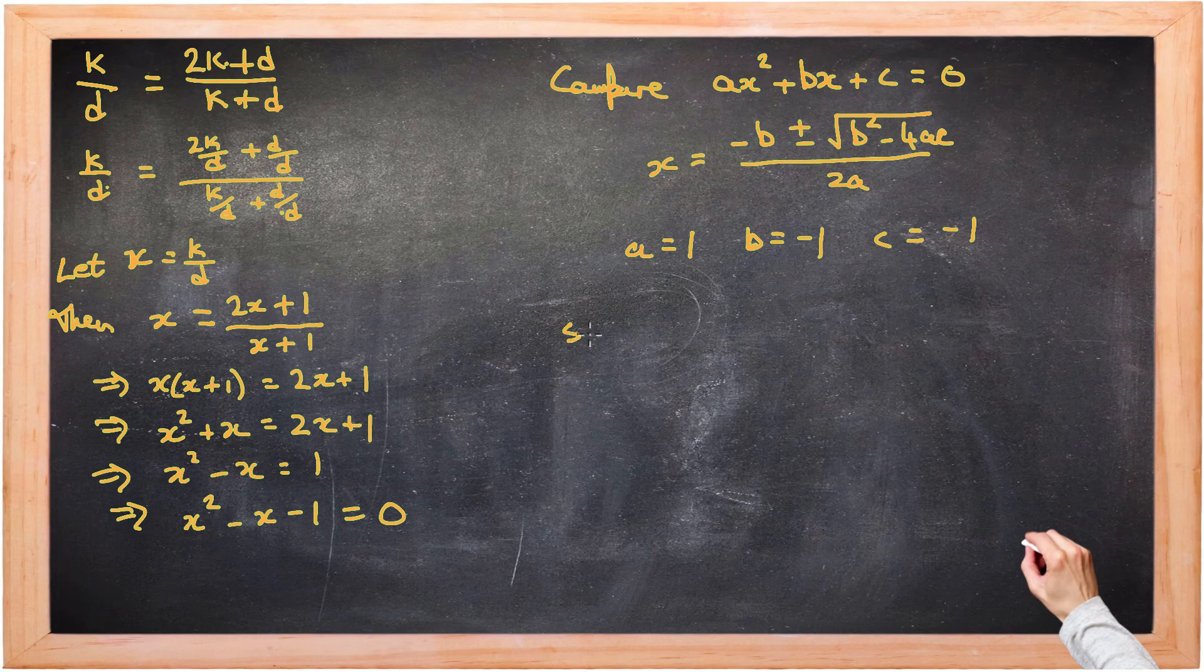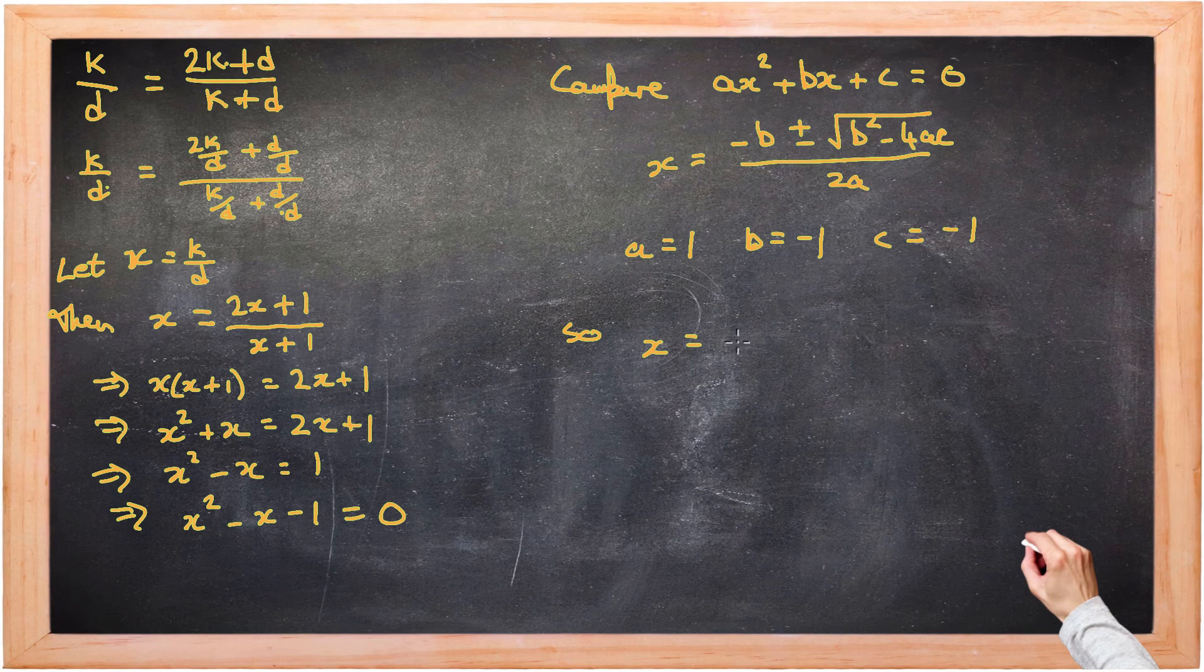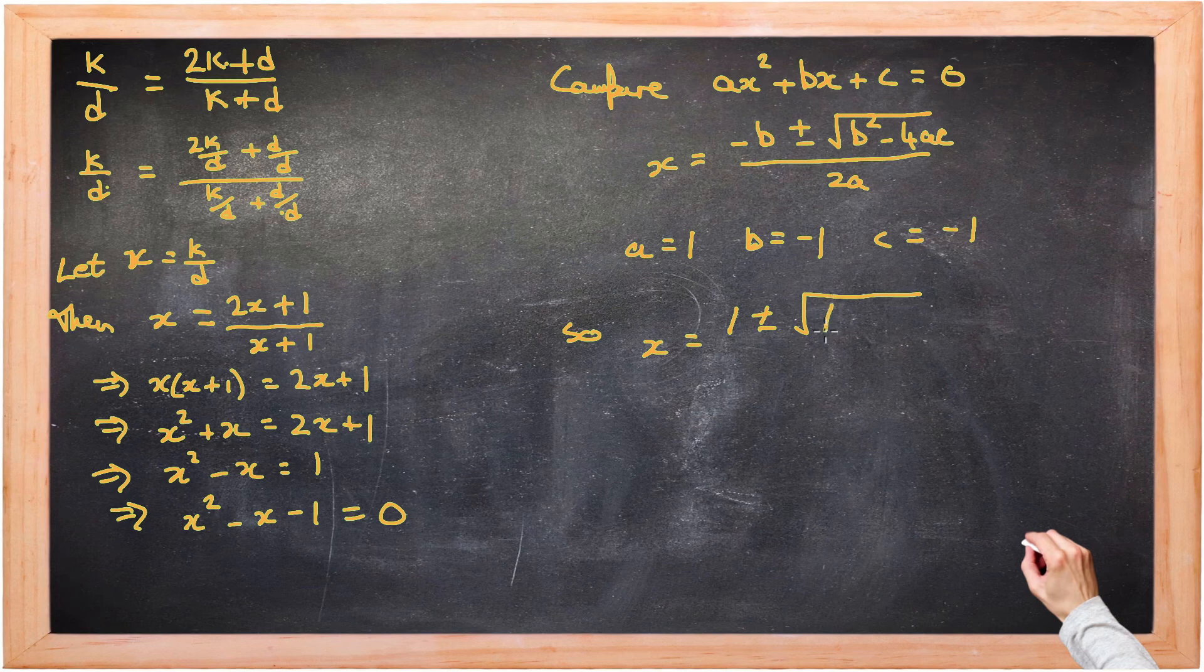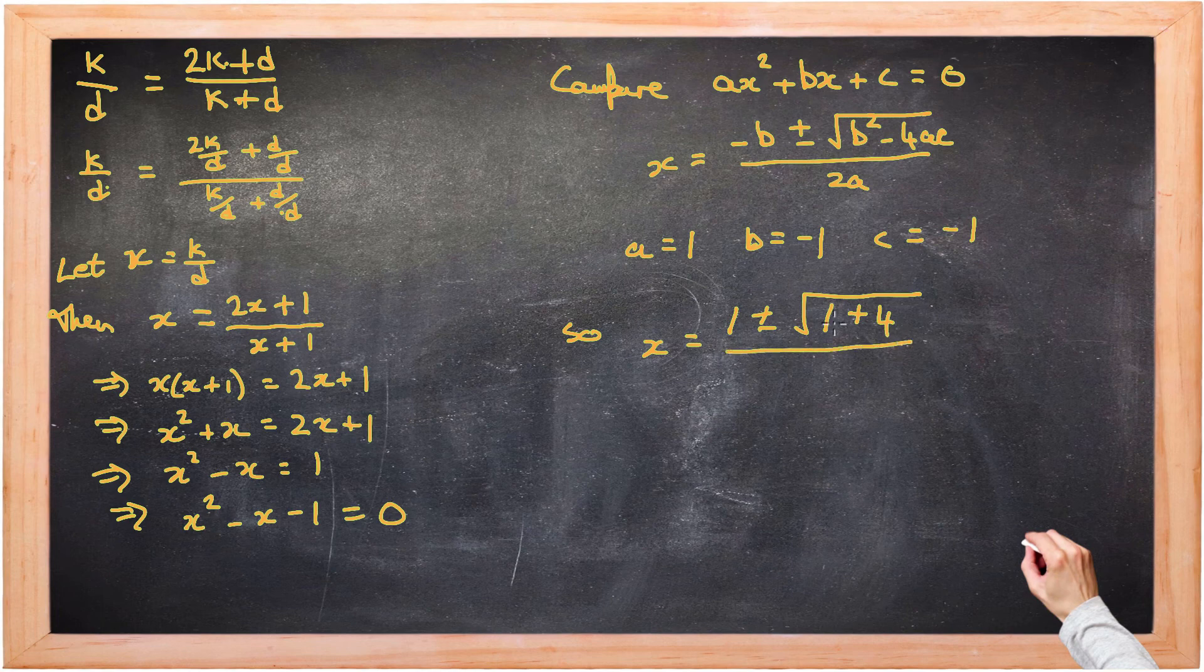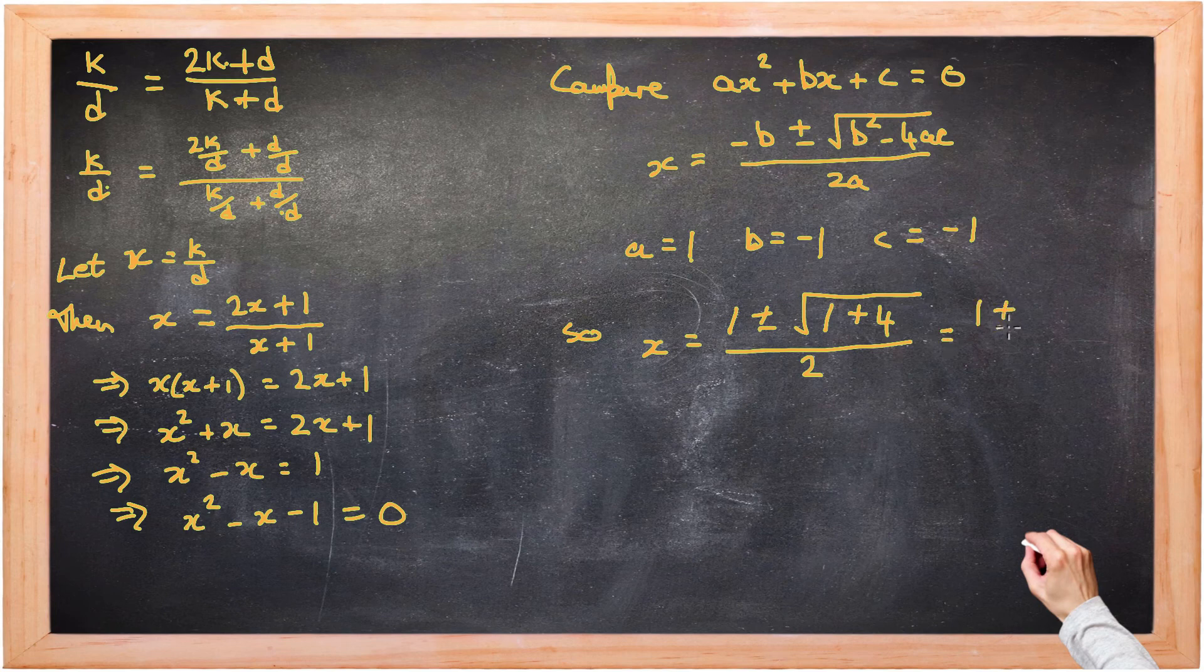So in this case, x is negative b, which is negative of negative 1, plus or minus square root of b². Negative 1 squared is 1. Now 4ac, a times c is negative 1. 4 times negative 1 is negative 4. And if we subtract negative 4, it's like adding 4 over 2a. So we get 1 plus or minus the square root of 5 over 2.